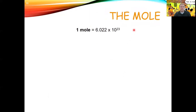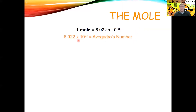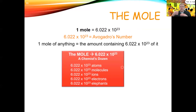Avogadro's number is given another name — we call it the mole. One mole is a number, just the same way as one dozen is 12. Avogadro's number, or one mole, is equal to 6.022 × 10²³. There is no unit after this number. One mole of something is always Avogadro's number of that thing. You can have a mole of atoms, a mole of molecules, a mole of electrons — a mole of anything you want, just like you can have a dozen of anything.